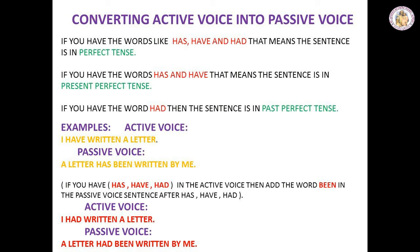If you have the words 'has', 'have', or 'had' in a sentence, it is in perfect tense. 'Has' and 'have' indicate present perfect tense; 'had' indicates past perfect tense. For perfect tense sentences in passive voice, you must add 'been' to these words — so 'has' becomes 'has been', 'have' becomes 'have been', and 'had' becomes 'had been'. For example: I have written a letter becomes a letter has been written by me.